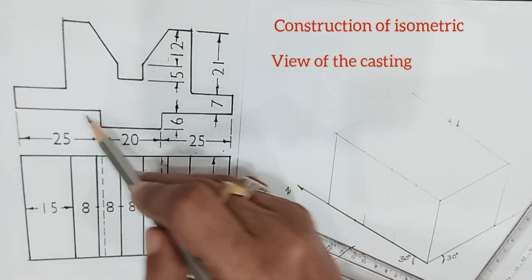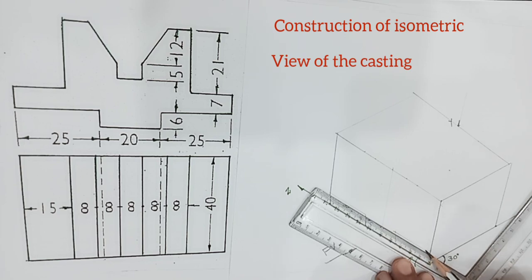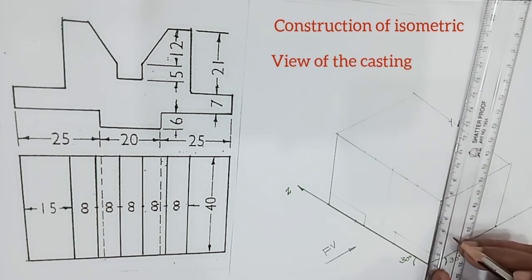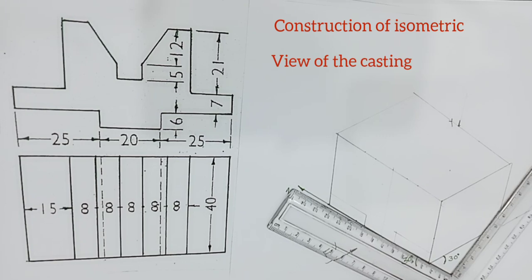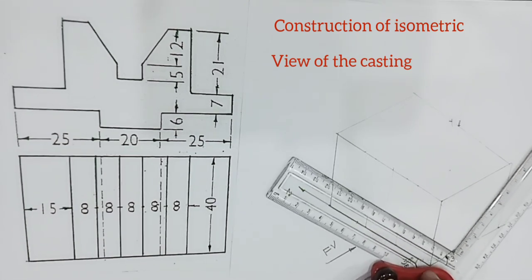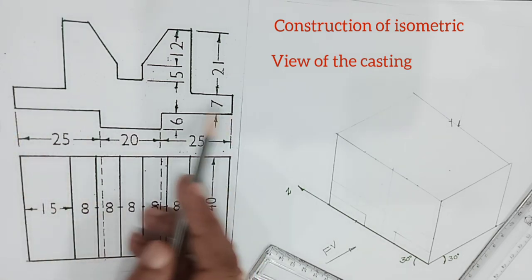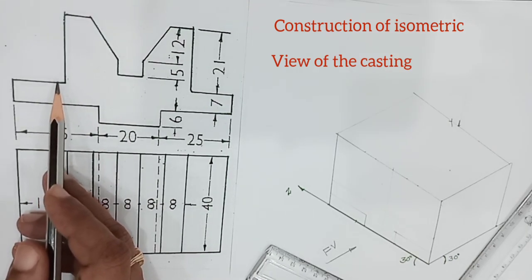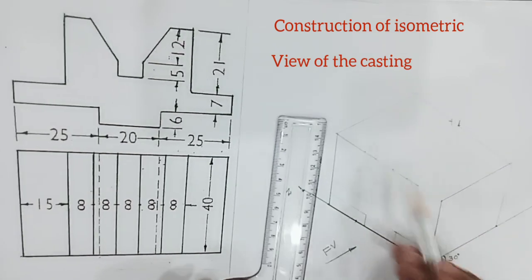Drawing lines on the left and right — just copying the front view onto this particular face. After that, this height is 7mm. Drawing lines parallel to the length line. From this end at a distance of 15mm, and from this end also at a distance of 15mm.